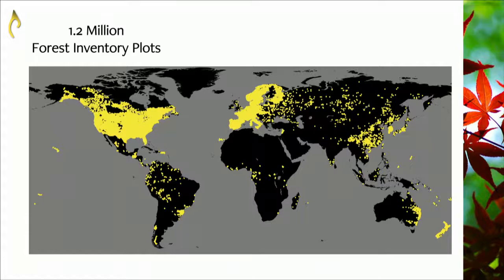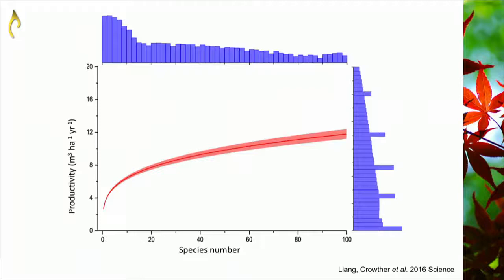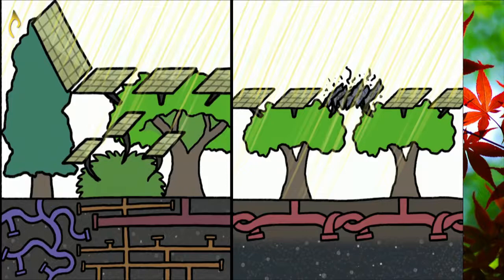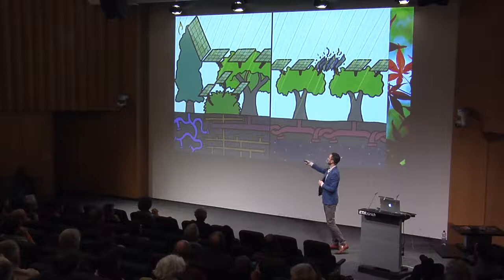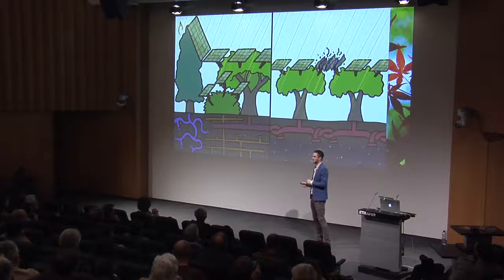The first thing we explored was a classic but ongoing question in community ecology: the relationship between the number of species in a plot and the amount of biomass produced. We find consistently at a global scale that plots with more species have a greater potential to capture carbon, put on biomass, and fill their space. Communities of the same species compete for the same resources, whereas plots with very different species have different strategies for capturing light, nutrients, and water — filling different niches and more efficiently capturing resources.